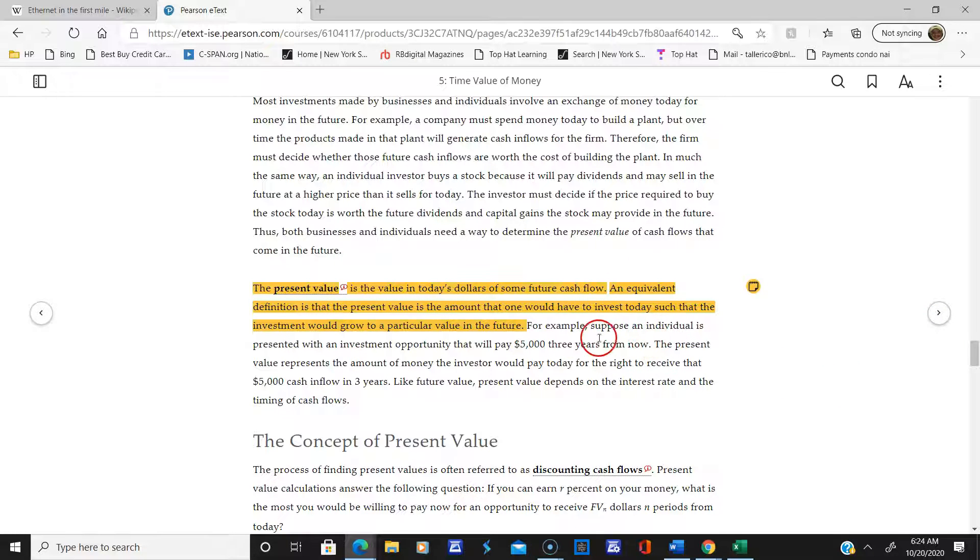Suppose an individual is presented with an investment opportunity that will pay $5,000 three years from now. The present value represents the amount of money the investor would pay today for the right to receive that $5,000 cash flow in three years. Like future value, present value depends on the interest rate and timing of cash flows.